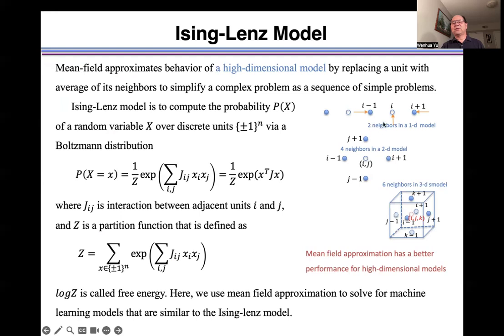For example, a unit has two neighbors in a 1D model, four neighbors in a 2D model, and six neighbors in a 3D model. Namely, mean field approximation has better performance for high dimensional models.